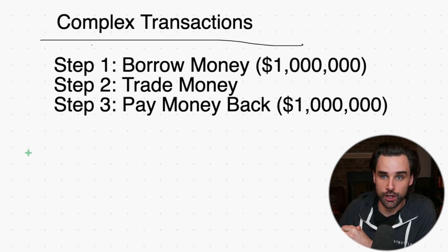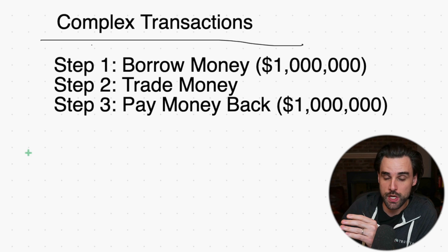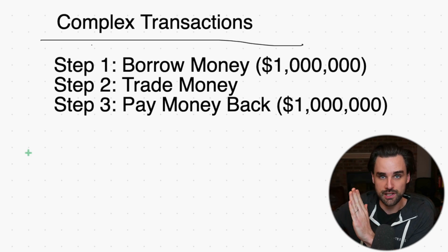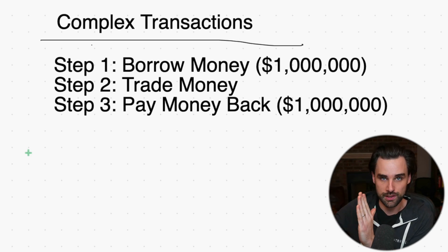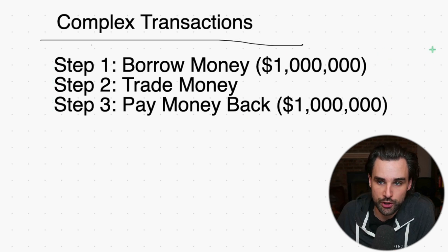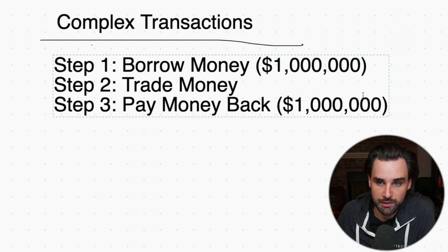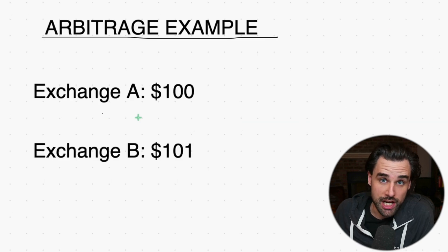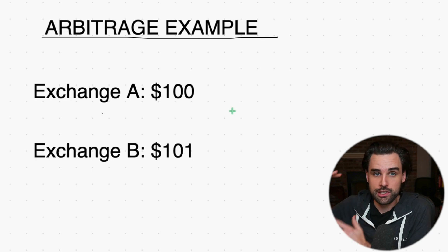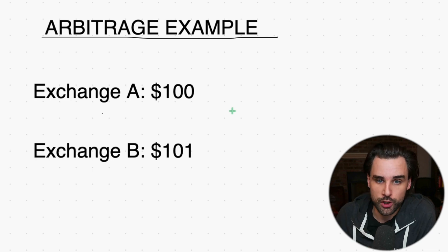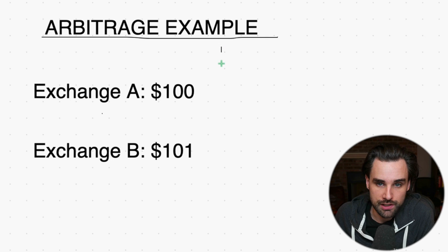Here's an example of a type of trade you could do in that scenario. Let's say there's a price discrepancy on two different cryptocurrency exchanges. On exchange A, the cryptocurrency is selling for $100, and on exchange B it's selling for $101. So what you can do is borrow all that money and buy up as much of this cryptocurrency as you can for $100.